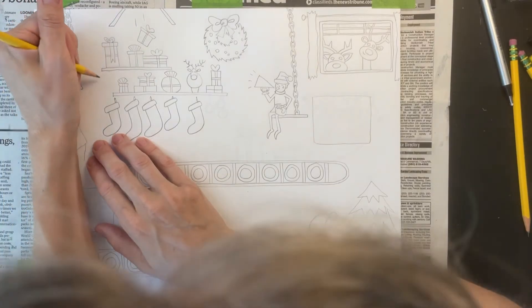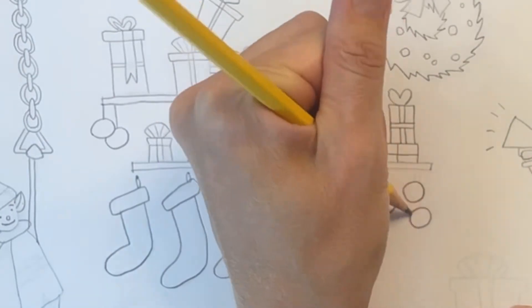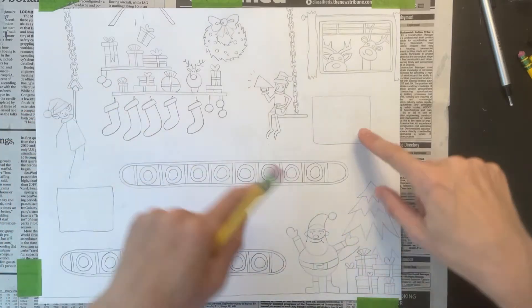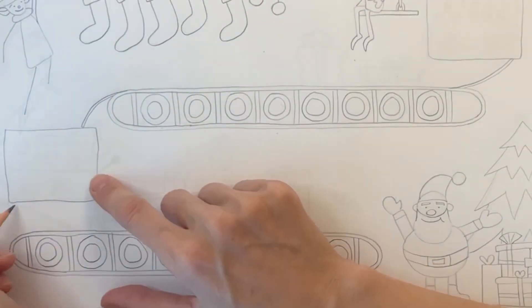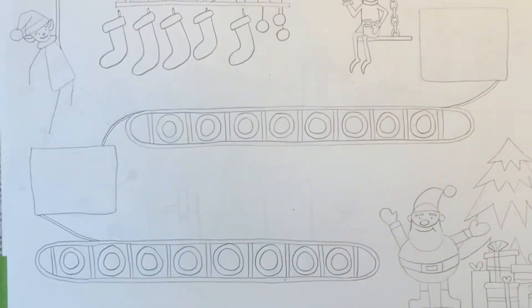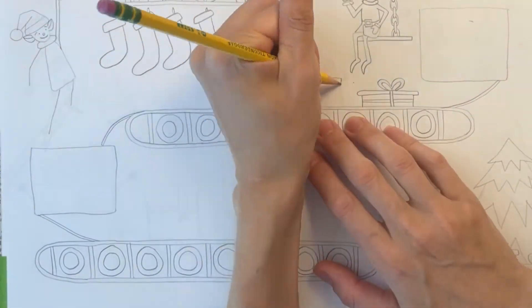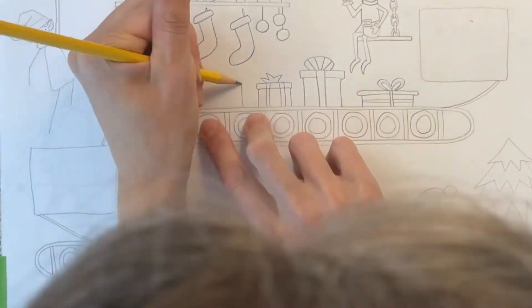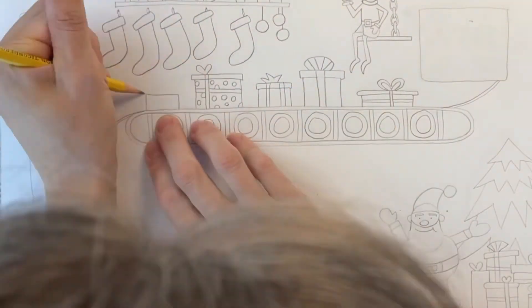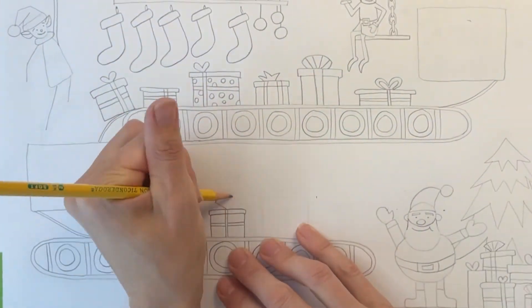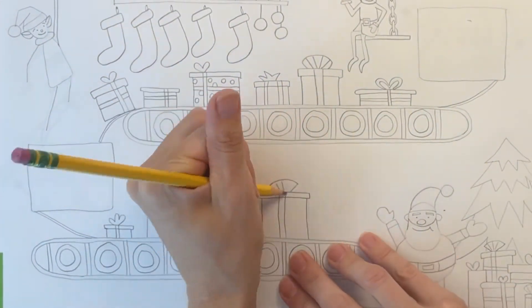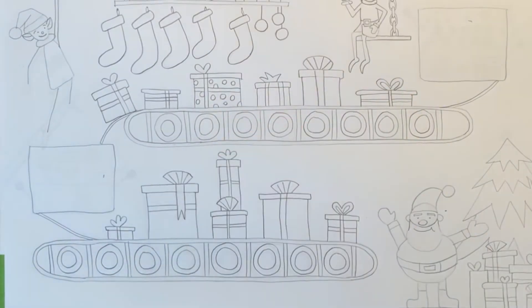I'm adding a few Christmas ornaments hanging from the shelves. Now I'm drawing where the belt of the conveyor belt connects to the two machines. I'm adding a bunch of Christmas presents on top of the conveyor belt. I like to add a variety of bows and ribbons to my presents. I like it when each present is a little bit different in size and shape. It just makes for a nice variety.